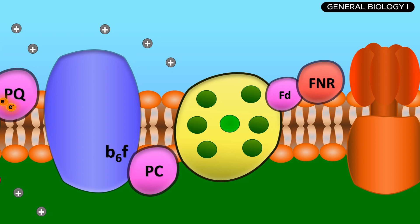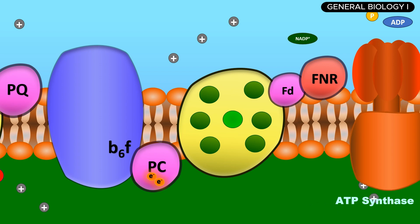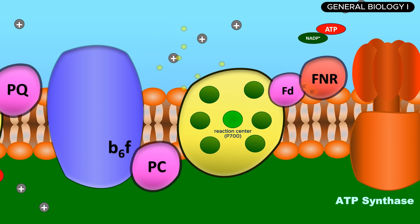The high-energy electrons pass through a series of proteins in the electron transport chain, which pumps hydrogen ions into the thylakoid space, creating a proton gradient. The proton gradient powers ATP synthase, an enzyme which phosphorylates ADP into ATP, the energy currency of the cell. The electrons, now at a lower energy level, are passed to Photosystem I, where they are re-energized by absorbing more light. These high-energy electrons are then used to reduce NADP+ into NADPH, another energy carrier.